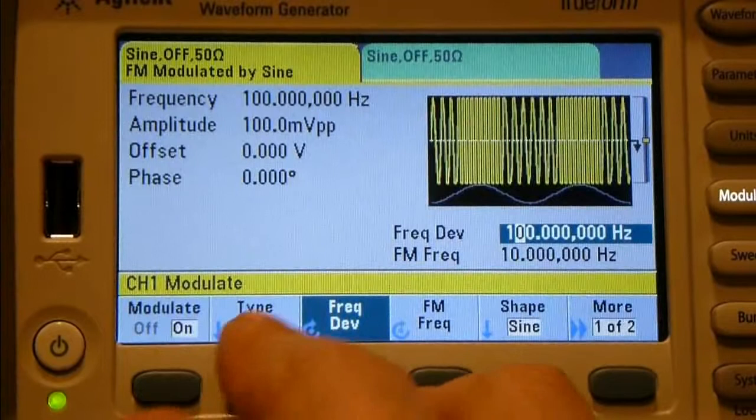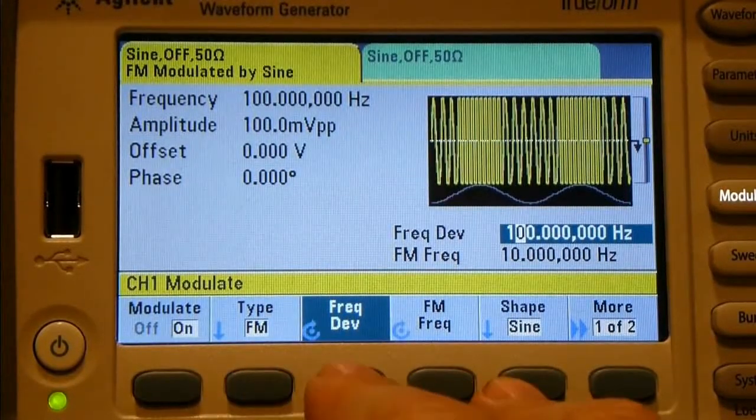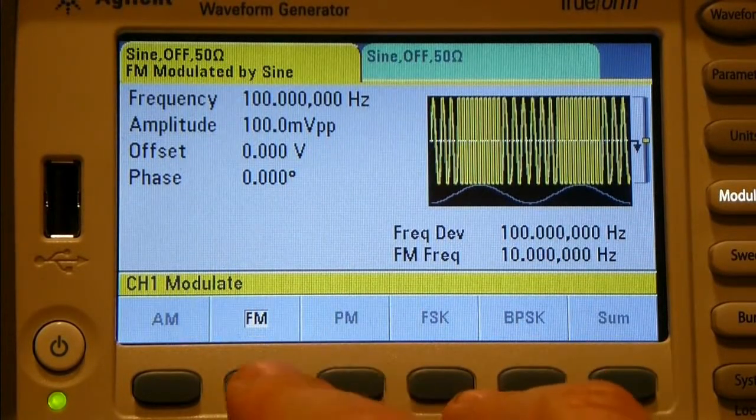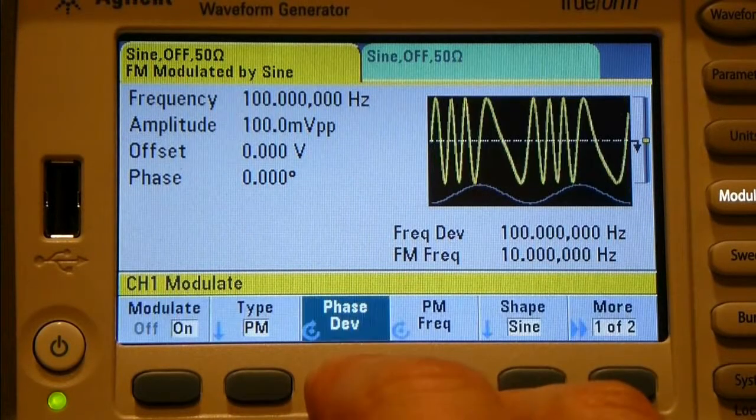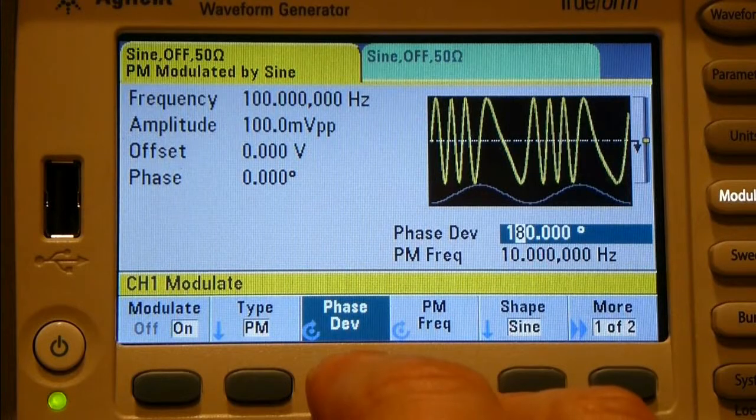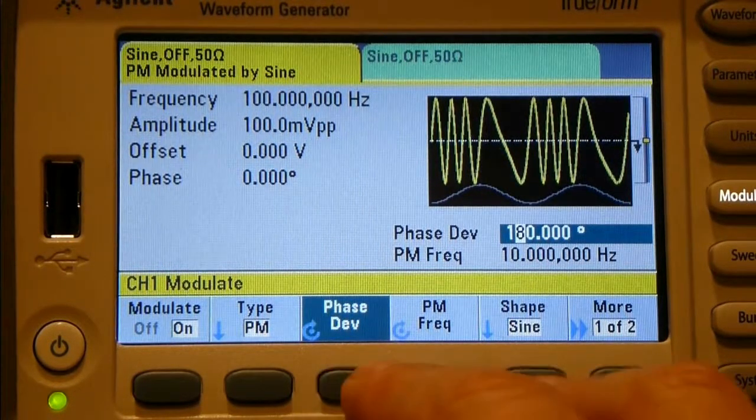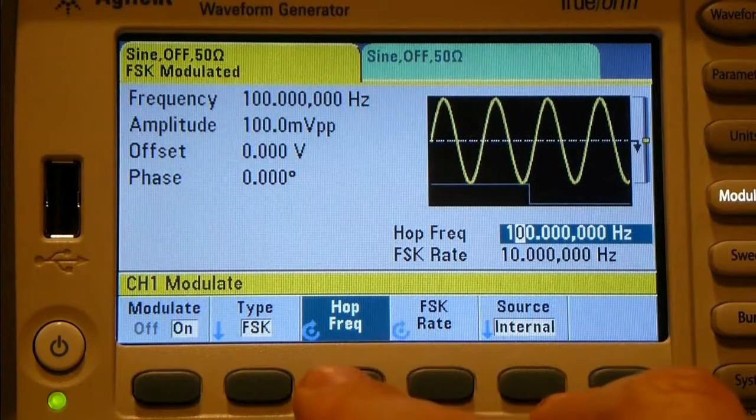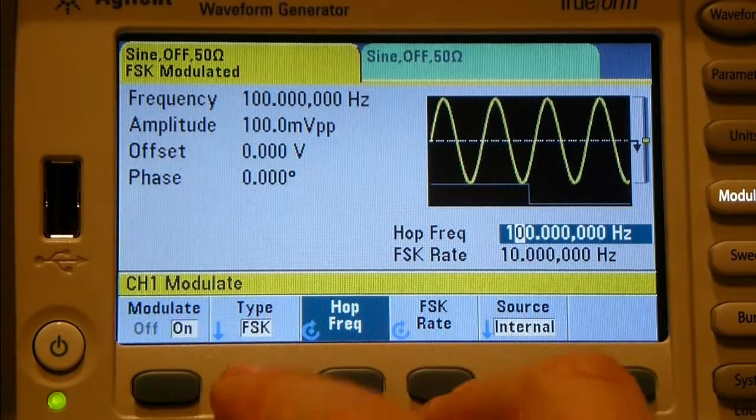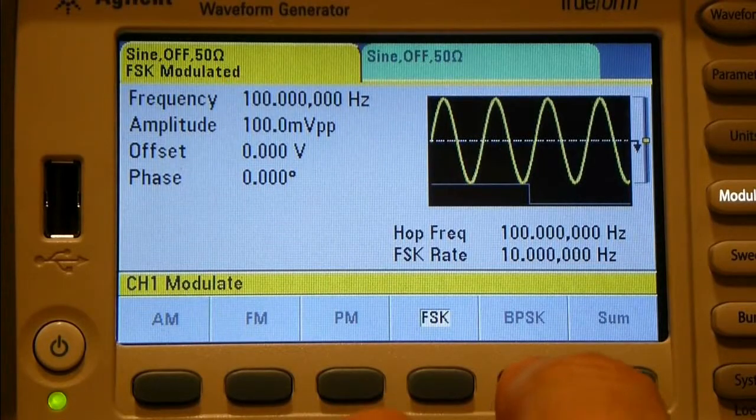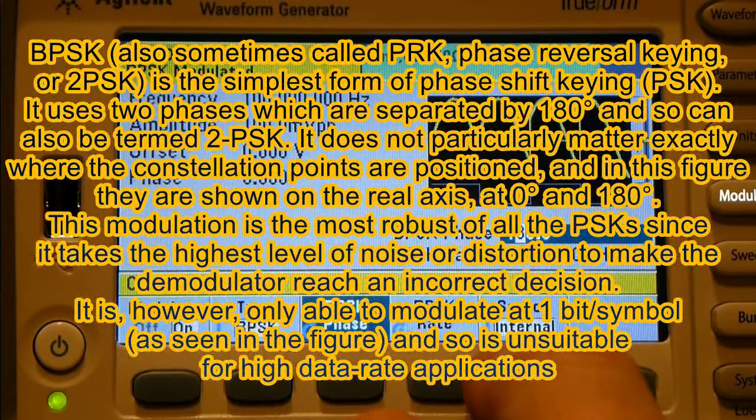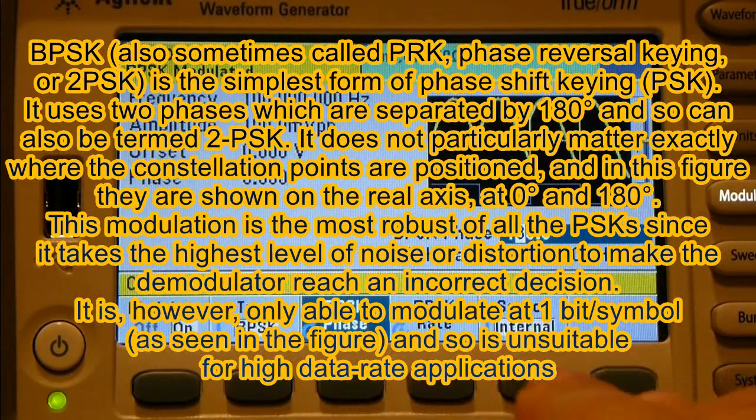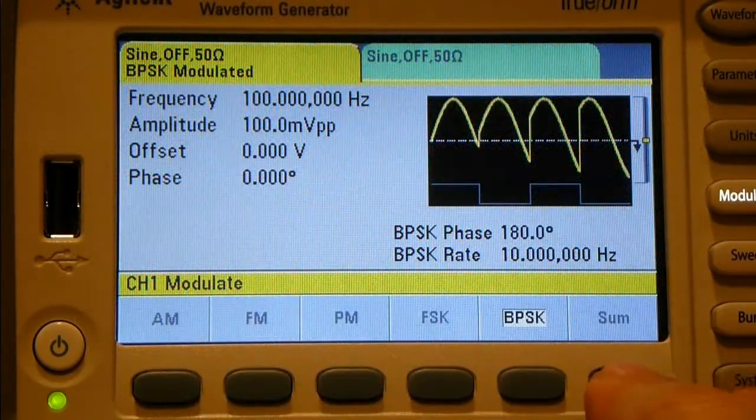What have we got? 100.000 Hz, and the amplitude frequency is 100 Hz as well. Let's just reduce that to 50 Hz modulation. There you go, that's a little better now. Different modulation things that we can do. You can select frequency, frequency deviation, phase modulation.